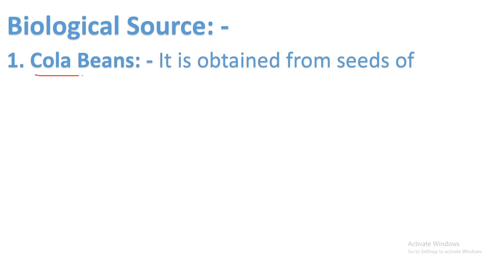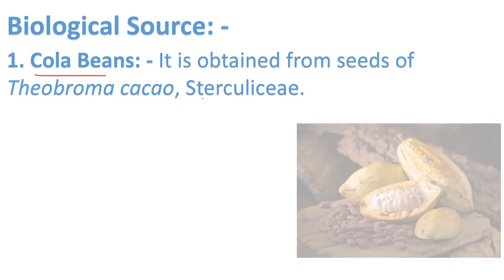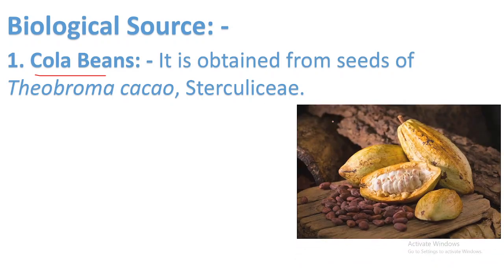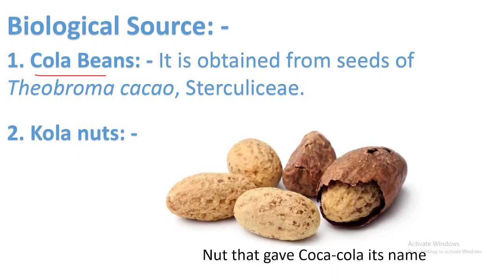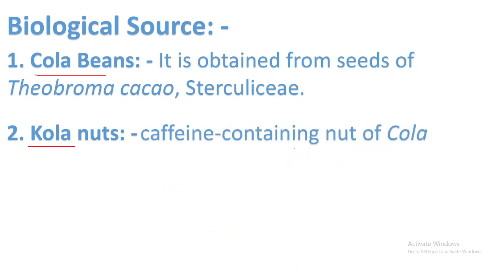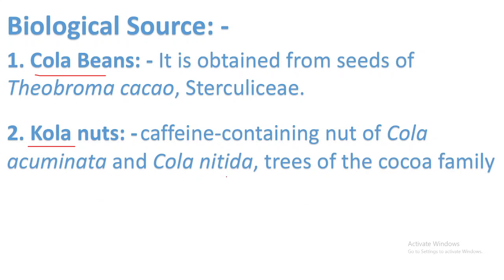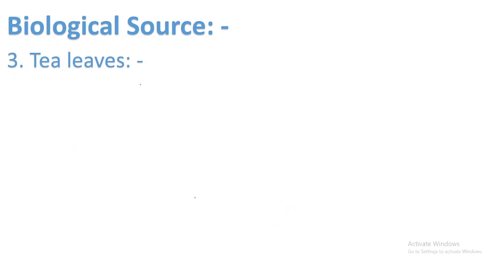Now let's see the biological sources of caffeine. First, cola beans: obtained from seeds of Theobroma cacao, family Sterculiaceae. Second, cola nuts: from these the Coca-Cola drink gets its name. These are caffeine-containing nuts of Cola acuminata and Cola nitida trees of the cocoa family, Sterculiaceae. Third biological source: tea leaves also contain caffeine.